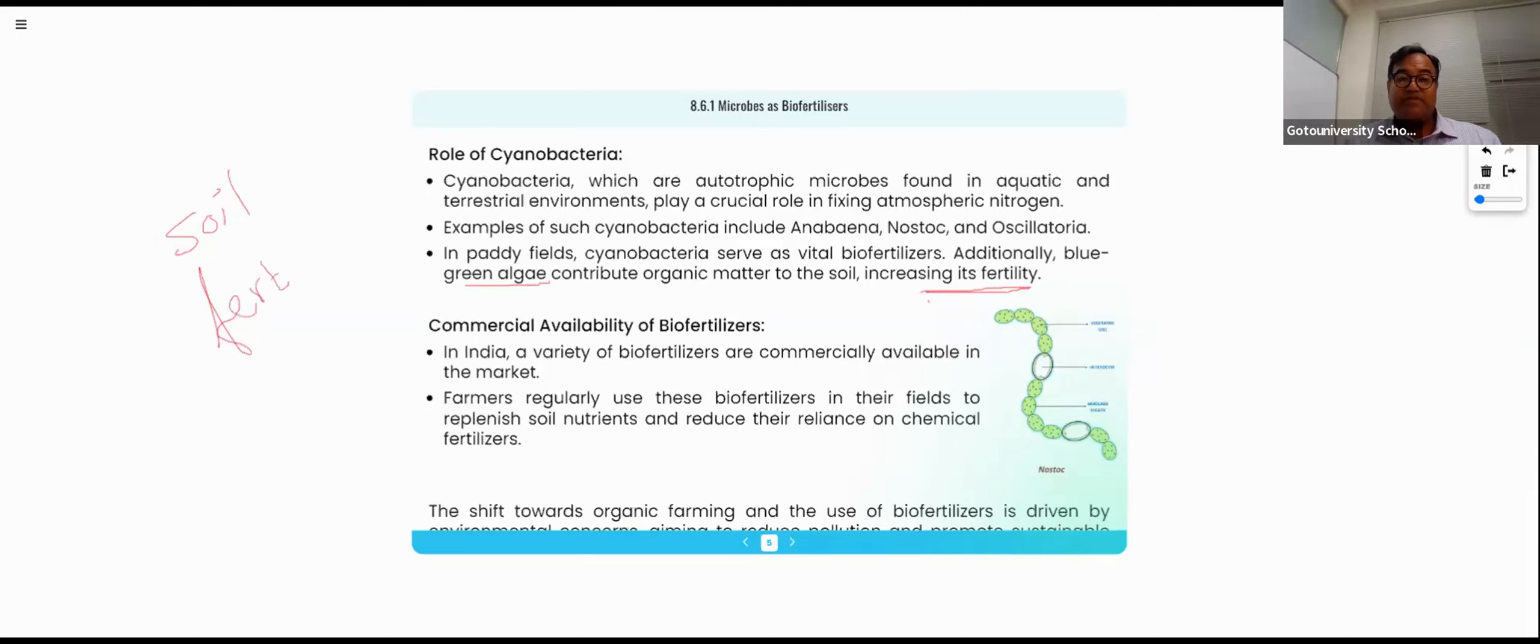Blue-green algae itself we are using as a fertilizer in the soil that increases the soil fertility quality. Again, I am repeating, soil fertility quality we are increasing by using blue-green algae. So Nostoc, Anabaena, and Oscillatoria are the Cyanobacteria which are growing at the massive level to support the nitrogen fixation process.